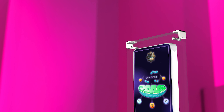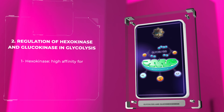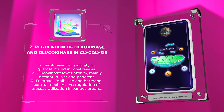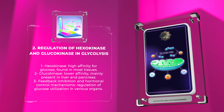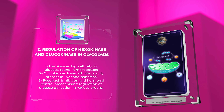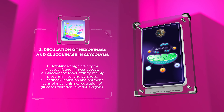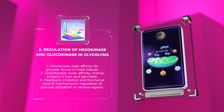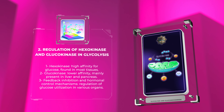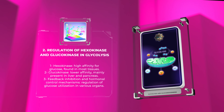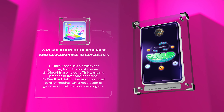Hexokinase and glucokinase are two isozymes responsible for phosphorylating glucose during glycolysis. Hexokinase has a high affinity for glucose and is found in most tissues, whereas glucokinase has a lower affinity and is mainly present in the liver and pancreas. Their differential regulation by feedback inhibition and hormonal control mechanisms ensures fine-tuned glucose utilization in various organs.